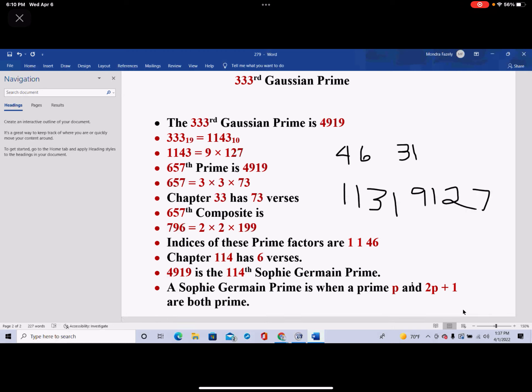But a prime P and 2P plus 1 are both prime. If that's the case, like 3, for example, 3 times 2 is 6, plus 1 is 7, so 3 is a Sophie Germain prime. 2 is a Sophie Germain prime, because 2 times 2 is 4, plus 1 is equal to 5.